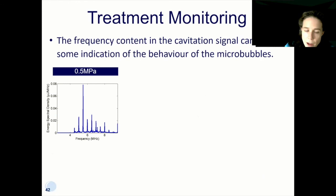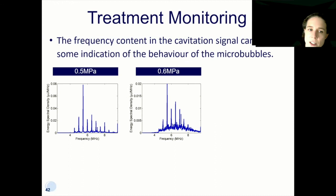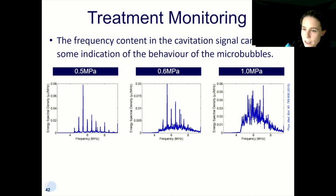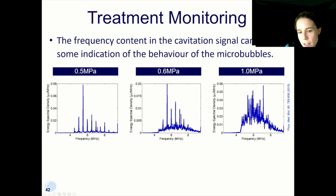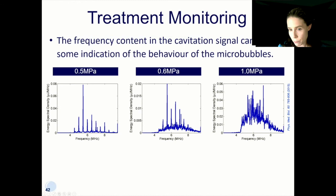The harmonic content can also give useful information because it tends to change as we increase the pressure driving the bubbles — the harder we drive the bubbles, the more nonlinear are their oscillations, and so the harmonic content in the bubble signal will change. Driving the bubbles gently, we see single harmonics being produced; driving harder, we also get some fractional harmonics. As we increase the drive pressure further, we start to see a region of broadband noise — emissions over all frequencies — and that broadband component starts to increase as we drive bubbles harder. Roughly speaking, that broadband component can be used as an indication of inertial bubble behaviour.